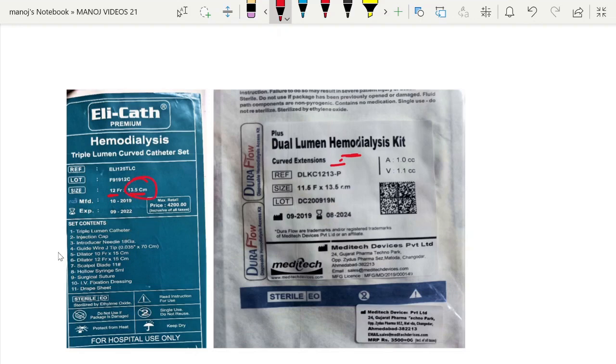Here also dilator is 12 French, it is equivalent to the catheter size. This is the commonly used double lumen IJV catheter, the size is 11.5 French and length is 13.5 centimeter.